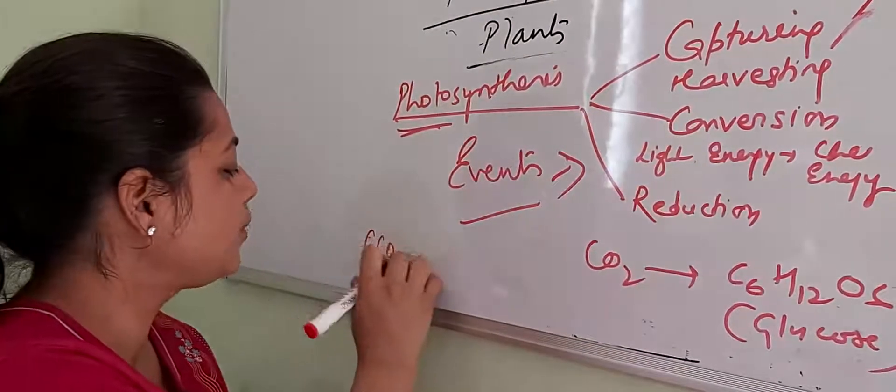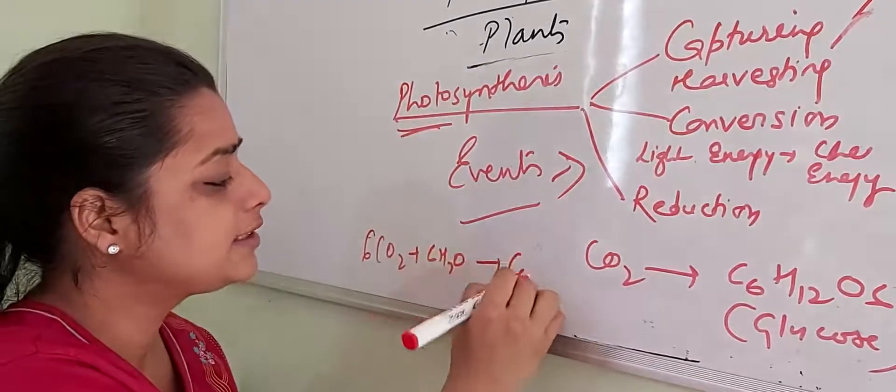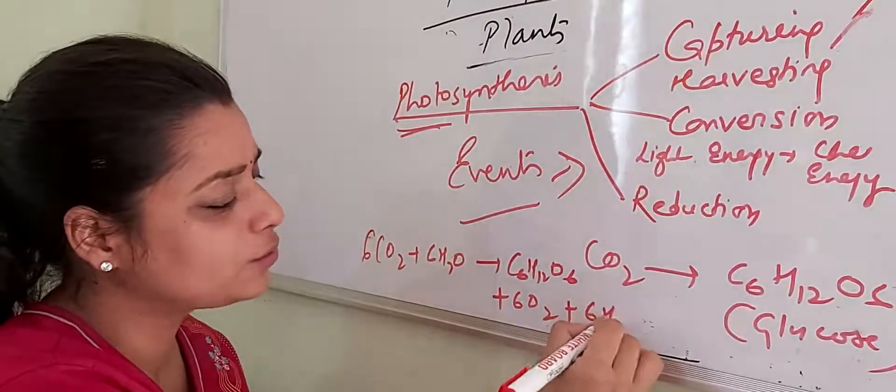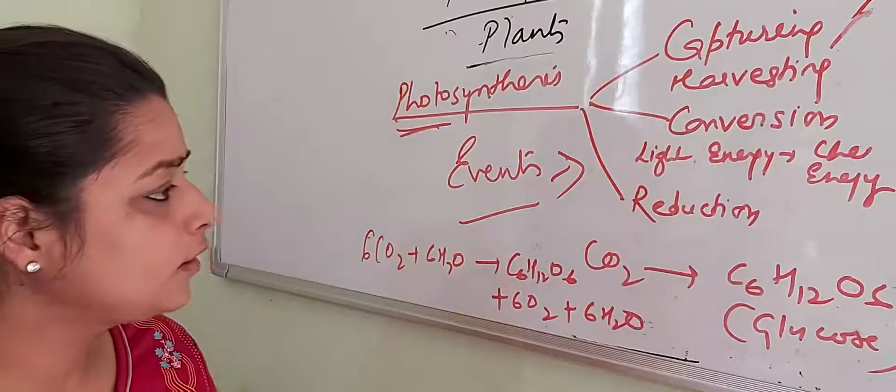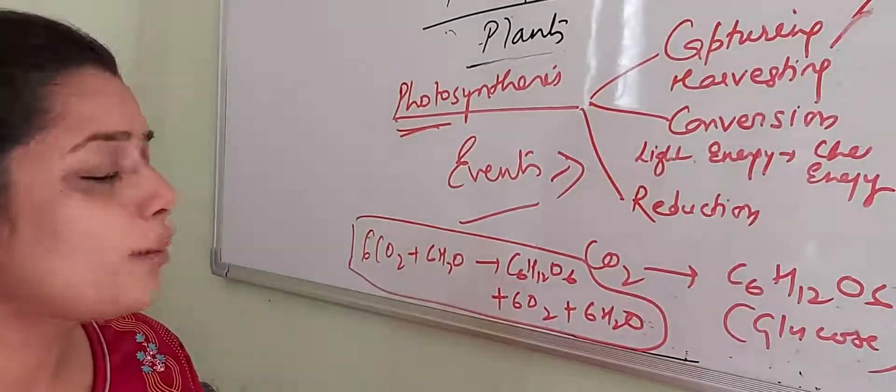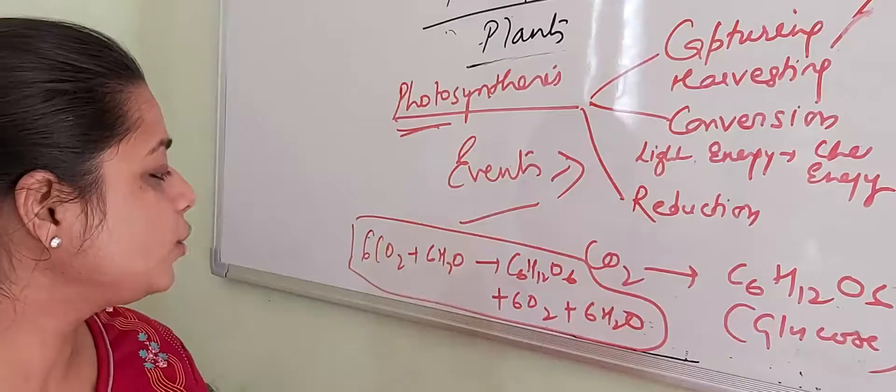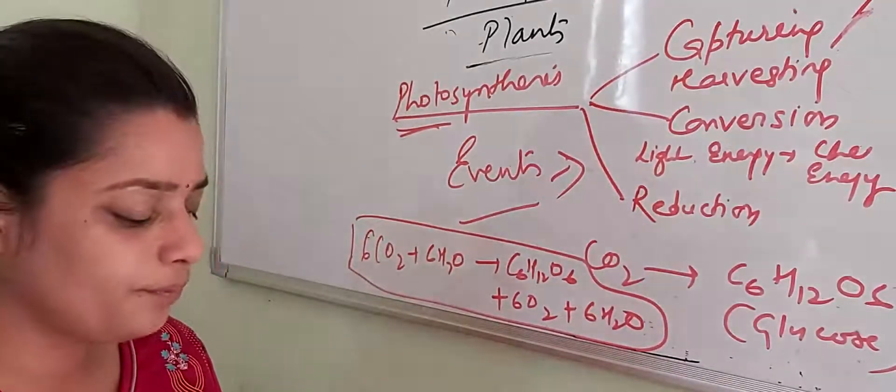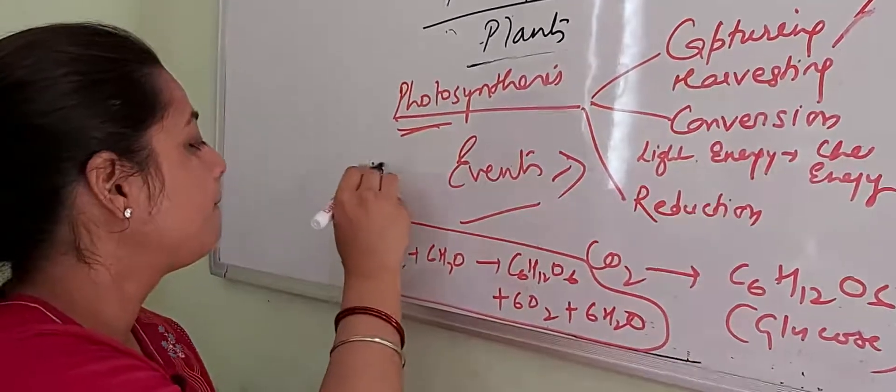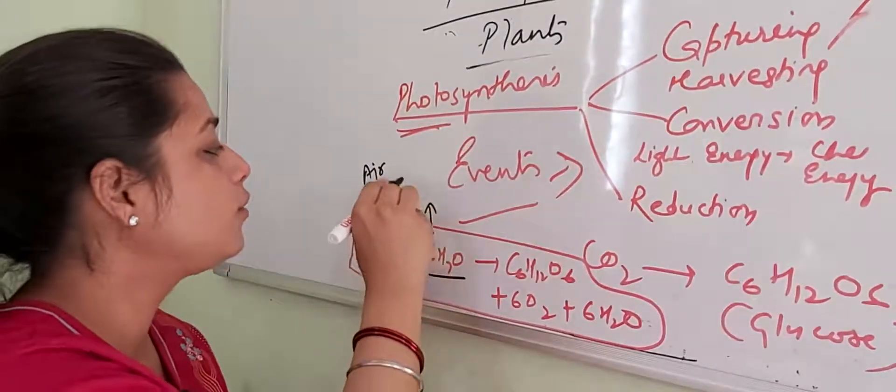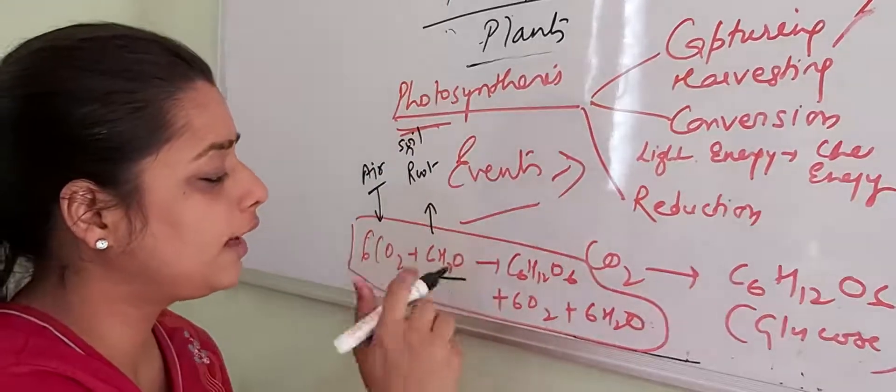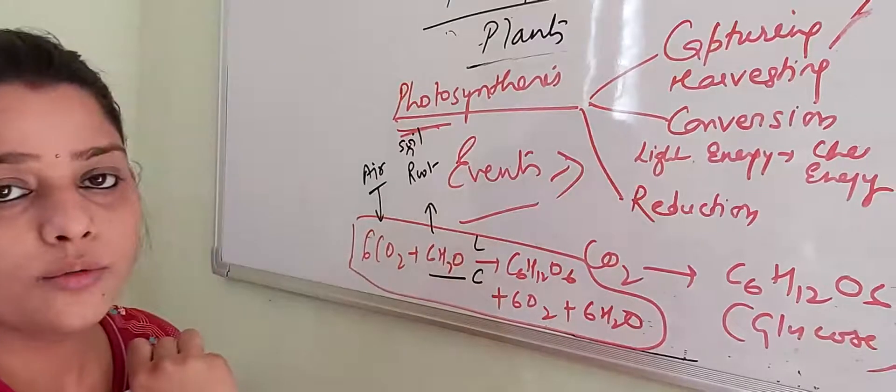So the equation is 6CO2 plus 6H2O gives you C6H12O6 plus 6O2 plus 6H2O. Now the question comes, where are we getting these raw materials from? We are getting CO2, which is a gas, from air. H2O we get from roots, coming from soil, in the presence of light and chlorophyll pigment.